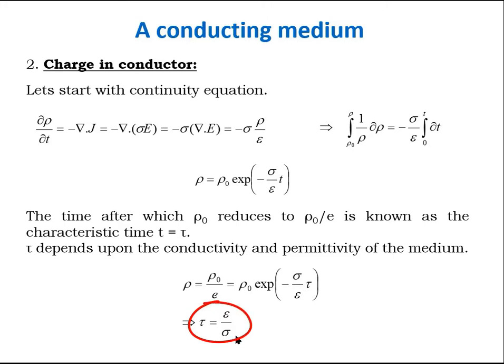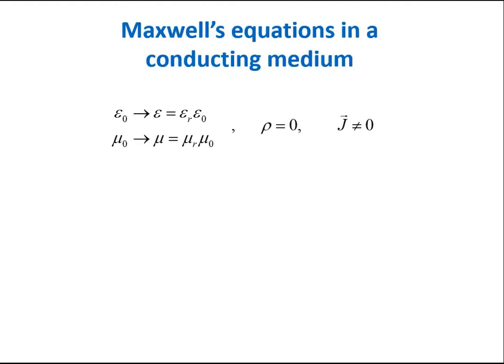The time after which rho0 reduces to 1 by E times rho0 is known as characteristic time t equal to tau. This tau depends upon the conductivity and permittivity of the medium, epsilon divided by the conductivity of the medium. It says that for a good conductor, the characteristic time is very less or a conductor is neutral practically. Because a conducting medium is neutral as a whole but has non-zero current density, Maxwell equation becomes like this. So in case of conducting medium, we get an extra term containing J in fourth Maxwell equation.